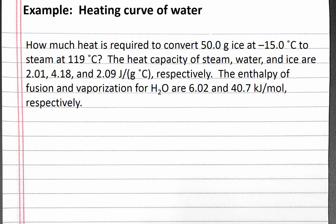In this example, we use the heating curve of water to determine the energy needed to convert ice to steam. Our problem reads: how much heat is required to convert 50 grams of ice at negative 15 degrees Celsius to steam at 119 degrees Celsius? The heat capacity of steam, water, and ice are 2.01, 4.18, and 2.09 joules per gram degrees Celsius, respectively. The enthalpy of fusion and vaporization for H₂O are 6.02 and 40.7 kilojoules per mole, respectively.